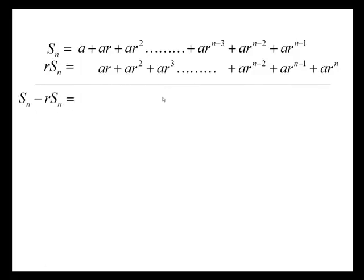So it's Sn minus rSn. Here we get a. All the rest of these terms disappear, the same top and bottom, and when we subtract them they go, except for the last term which stays as minus ar to the n.